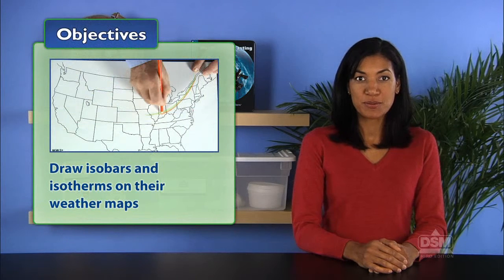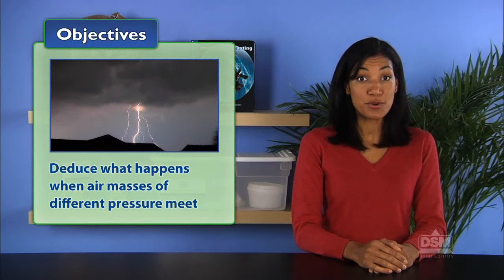Students first draw isobars and isotherms on their weather maps, and then deduce what happens when air masses of different pressure meet.